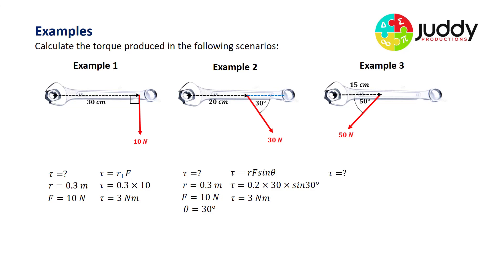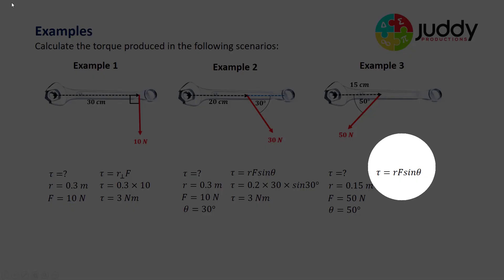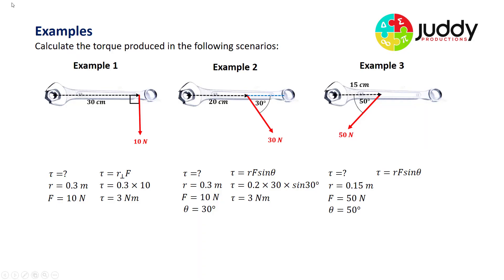A final example: find the torque. We have a radius of 0.15 meters, a force of 50 newtons, applied at an angle of 50 degrees. Using torque equals R times F times sine of theta, substituting our values in, we get an answer of 5.7 newton meters.